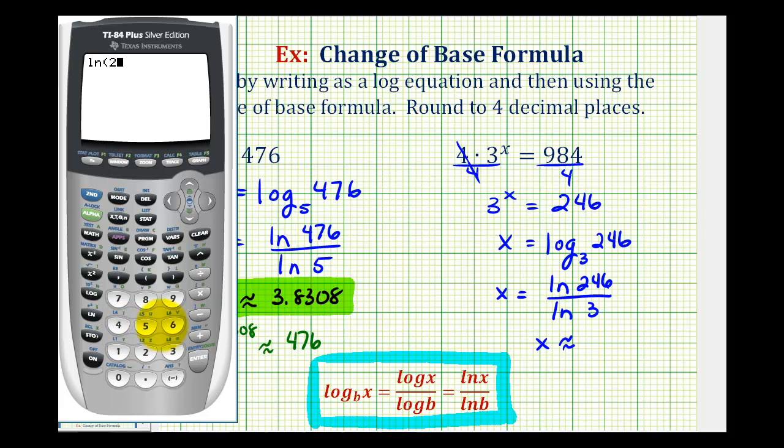Natural log 246 divided by natural log 3. x is approximately 5.0112.